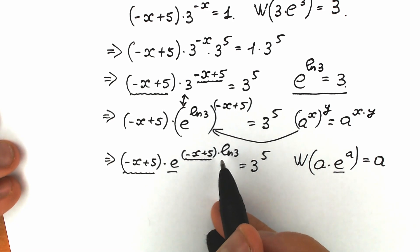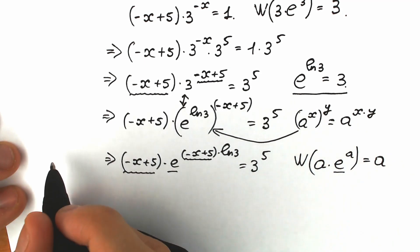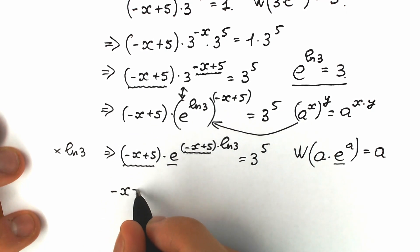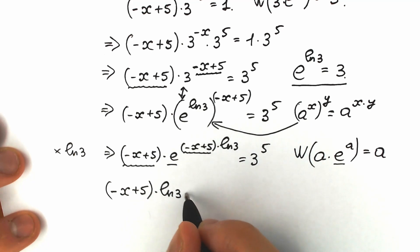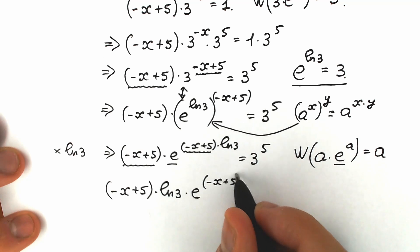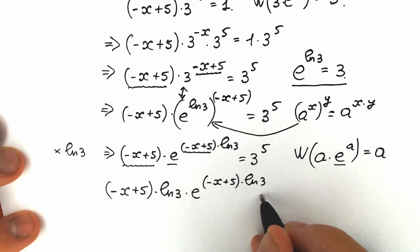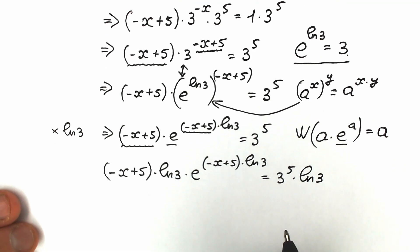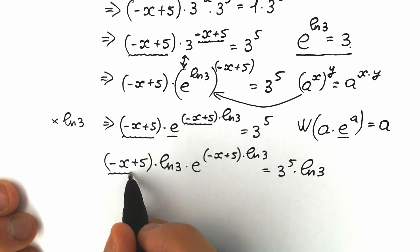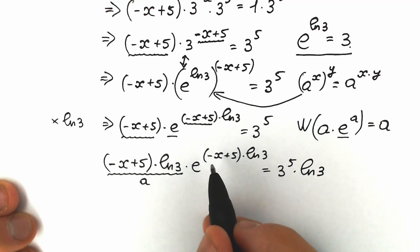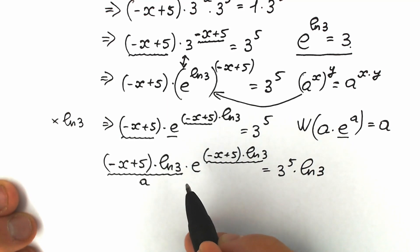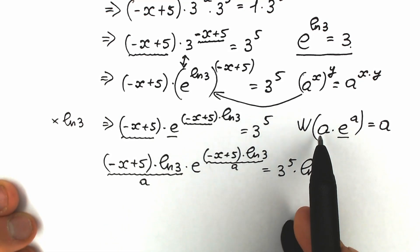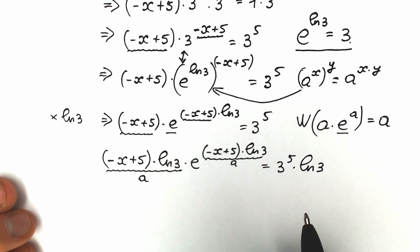Right now let's multiply both sides by natural log 3. As a result we have: minus x plus 5 times natural log 3, times e to the power of minus x plus 5 times natural log 3, equal to 3 to the power 5 times natural log 3. Now if you look closely — minus x plus 5 times natural log 3, this is our a, and we have the same expression in the exponent. This is exactly our case: a times e to the power a. So we can easily apply Lambert W function.